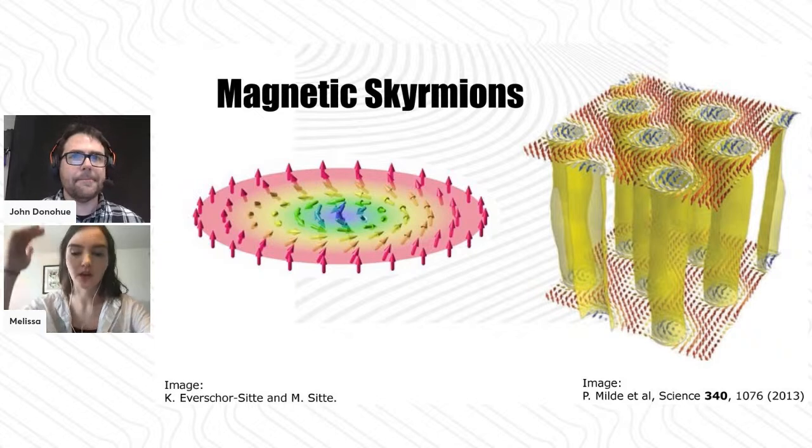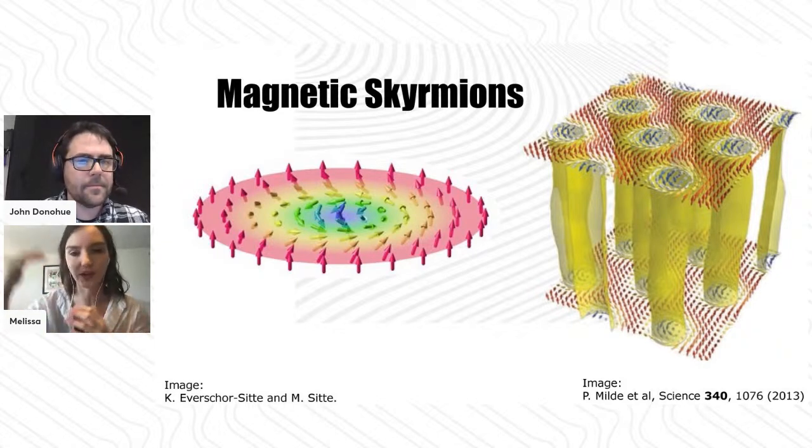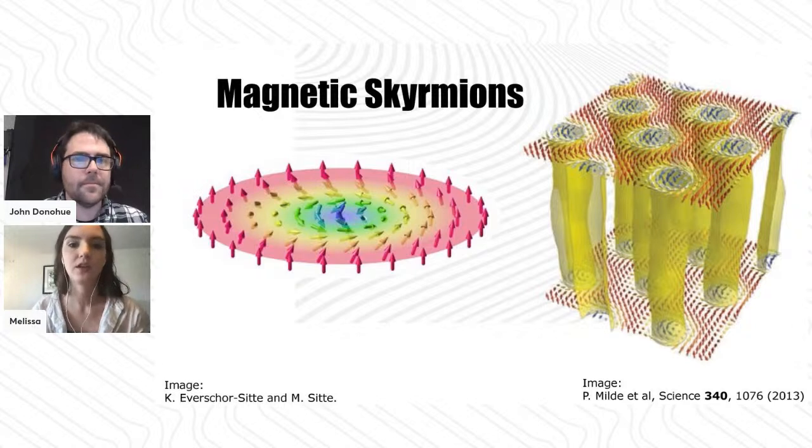You can get to even higher topologies of two and three and four. Depending on how high that order is, you can get a higher energy barrier.